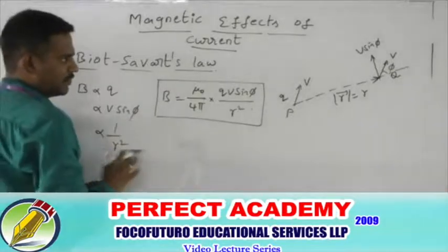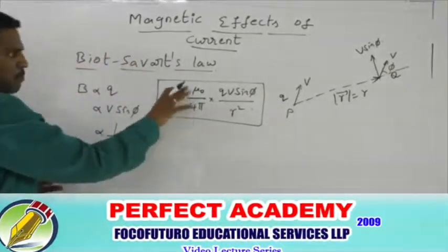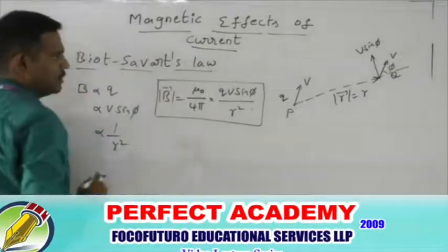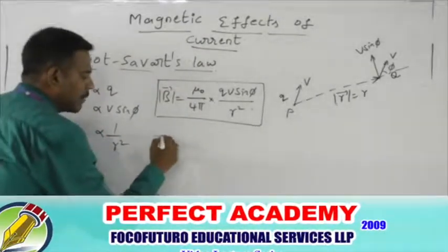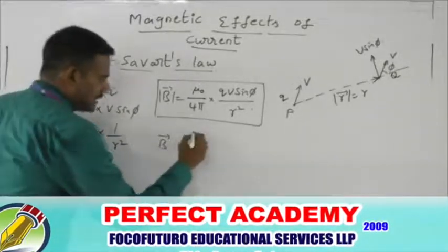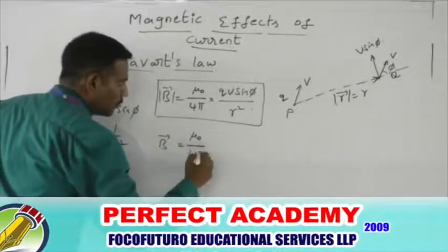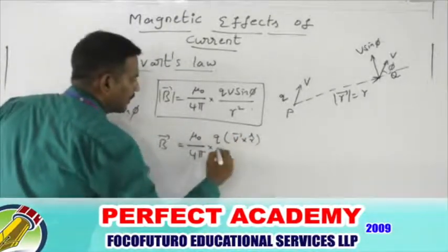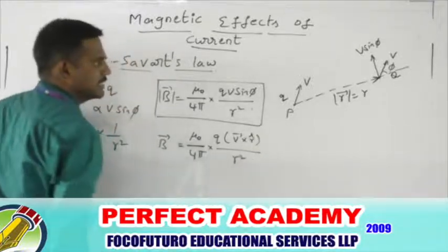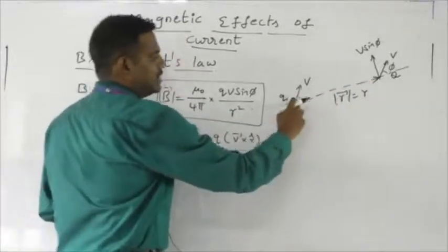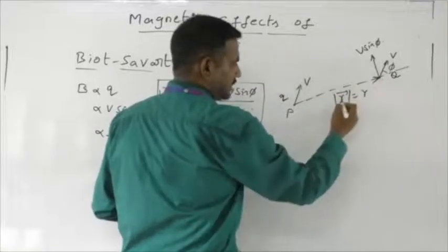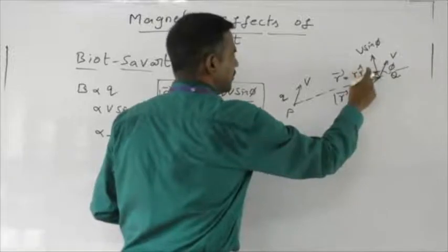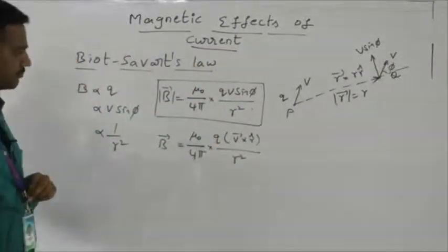Initially it was given for a moving charged particle only, but it can be modified for a straight-line conductor. If I would like to write the magnetic field intensity in its vector form, then it is written as μ₀ by 4π times Q into V̄ cross R̂ divided by R square, where R̂ is the unit vector of the line joining P to Q. So R̄ equals R into R̂, and that unit vector is what I have denoted here.